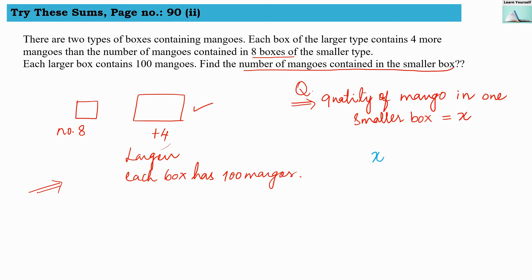We already have x — that is, x number of mangoes are there in one smaller box. Now, how many smaller boxes are there? Eight smaller boxes are there. So here I am going to multiply with eight. So 8x represents the total quantity of mangoes in all the smaller boxes.